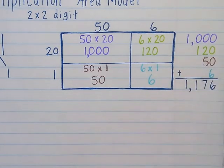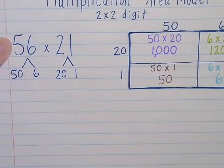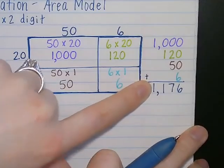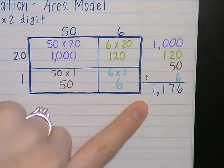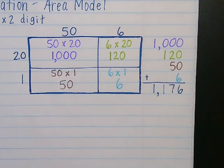So my answer to my original problem, 56 times 21, is equal to 1,176. And I can use the standard algorithm to check my work. This is the same exact answer I got the first time when I did it. So I know that that's correct.